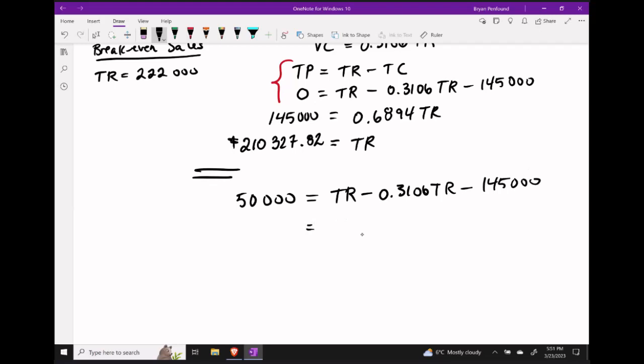We already know that the TRs will simplify and give us 0.6894. Let's go ahead and add $145,000 to both sides so that we have $195,000 on the left side.